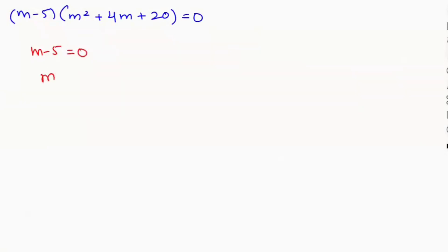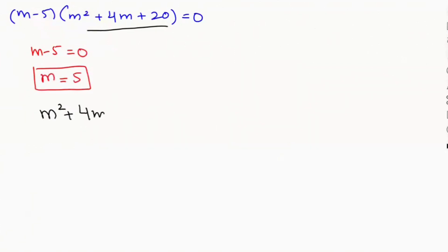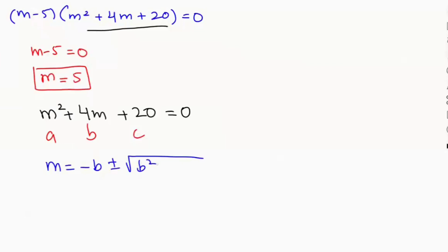The second case gives us the quadratic equation m squared plus 4m plus 20 equals zero. Here we have a, b, and c values. Now I'm going to apply the quadratic formula: m equals negative b plus or minus the square root of b squared minus 4ac, all over 2a.